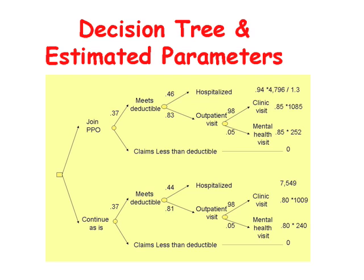In the lower section, we show the calculation of costs directly read from the experiences of the employees. The hospitalization cost was around $7,549. The rate of hospitalization was 0.44 and the rate of outpatient visits was 0.81. Notice that under joining the PPO, we have increased these rates.